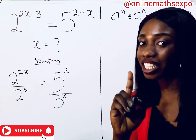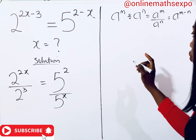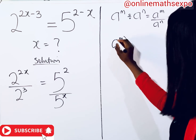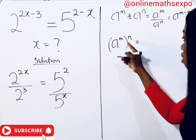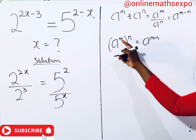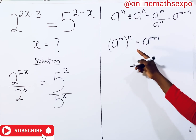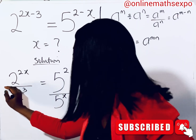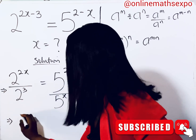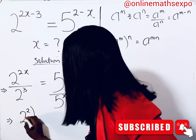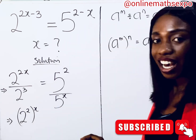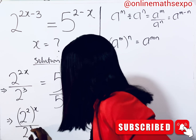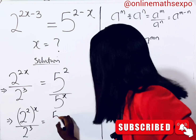Now remember another exponential rule: when you have a to the power of m, raised to the power of n, it simply means a to the power of m×n — you multiply the powers. So this gives us 2 to the power of 2, raised to the power of x, all over 2 to the power of 3, equal to 5 to the power of 2 over 5 to the power of x.